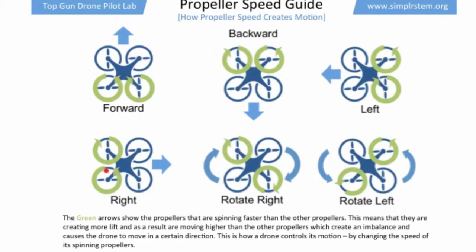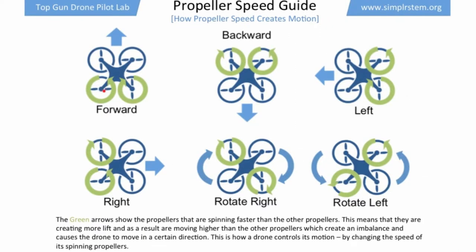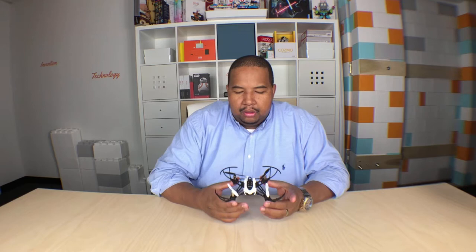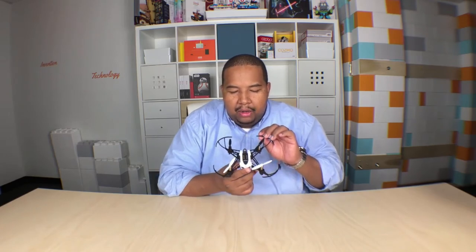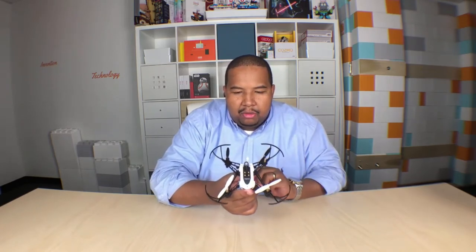In that first image in the upper left-hand corner, if we want to move forward, you can see that the two back propellers are spinning faster. A drone has a front and a back just like a car does, so if we wanted to go forward, the two propellers in the back spin faster. These two are spinning faster than the front two. Those two spin faster, it pushes that side up higher, puts the drone off balance, and it moves forward.